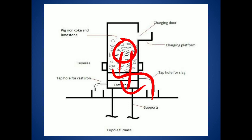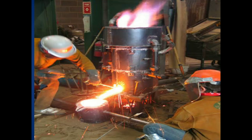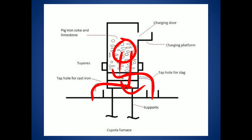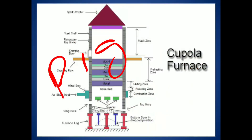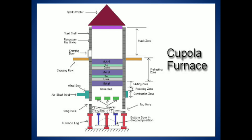This is the general process of a cupola furnace — this is the practical machine. It is a cylindrical shell. This is very important from your exam point of view. The charging door is used to introduce the charge, and nozzles are used to introduce the air.